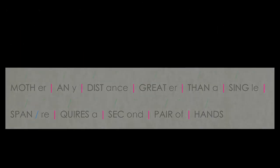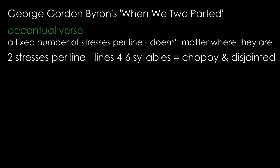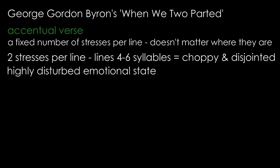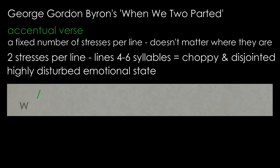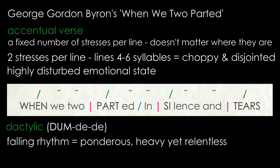Another poem which has similar rhythmic features is Byron's When We Two Parted. This is written in accentual verse, which has a fixed number of stresses in each line regardless of the number of syllables. In this case Byron has chosen only two stressed syllables per line, so line lengths vary between four and six syllables, which makes the poem quite choppy and disjointed — perhaps to reflect his highly disturbed emotional state. Looking at pairs of lines — 'When we two parted in silence and tears' — the base metre is therefore largely but not exclusively dactylic: dum-di-di. Due to the falling nature of the rhythm, where a stressed syllable is followed by two unstressed syllables, it makes the poem ponderous and heavy yet relentless, perhaps reflecting how he is weighed down by sadness at the end of the relationship.